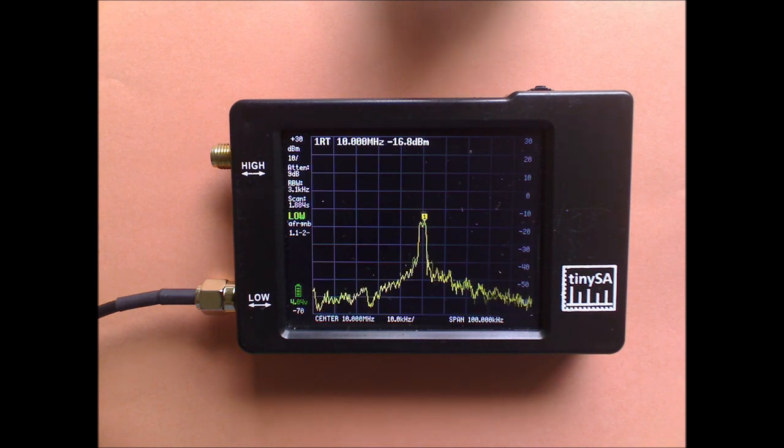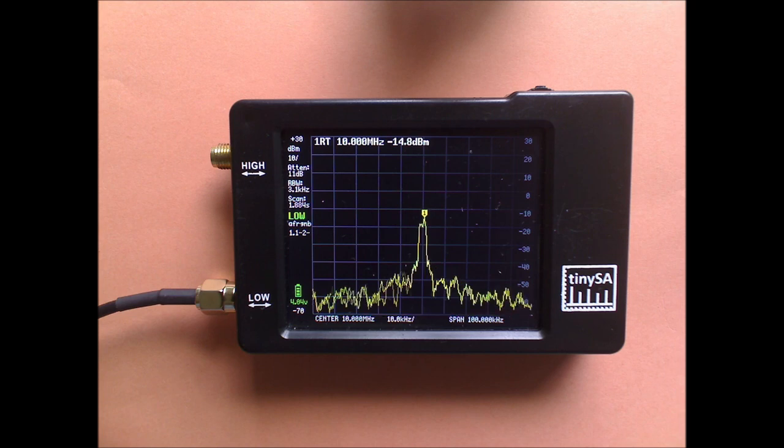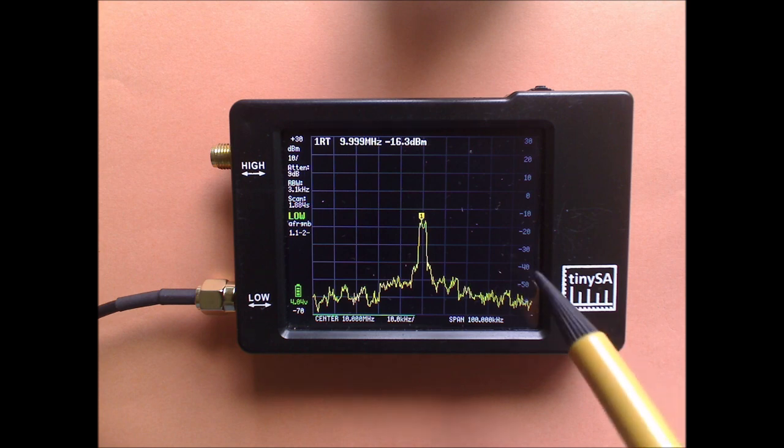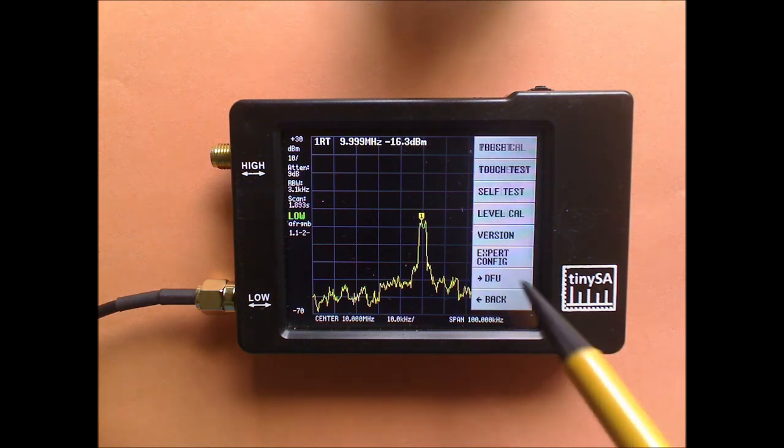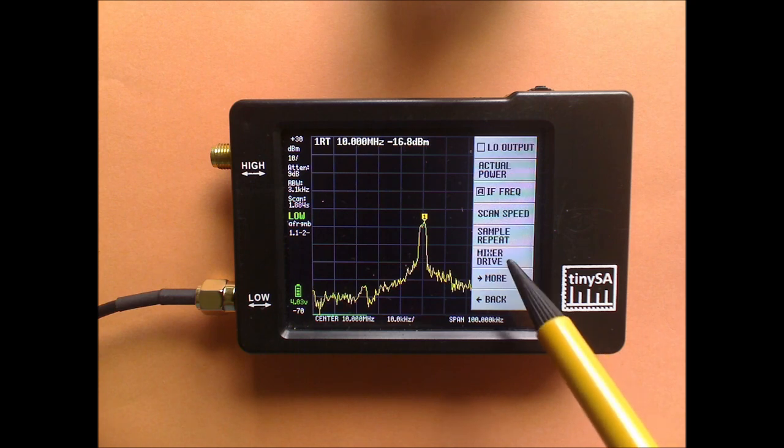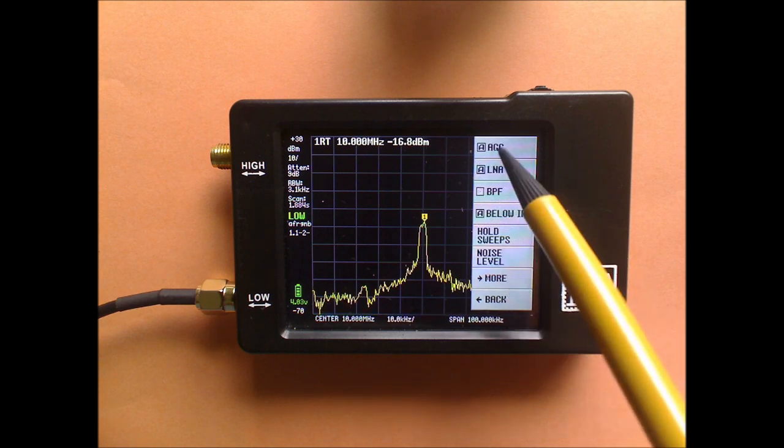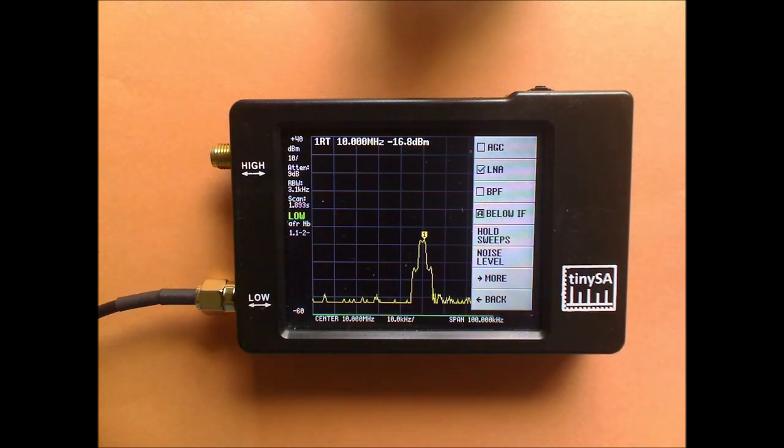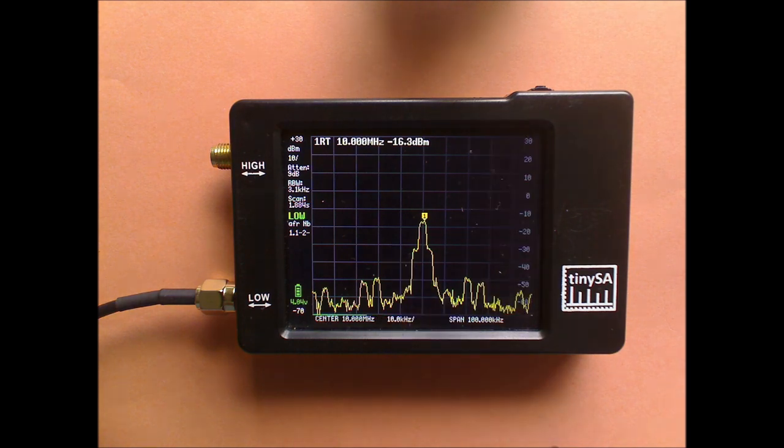We now have to take one more step to be able to see the AM modulation. The TinySA uses an automatic gain control which gets confused from the AM signal. So we have to switch off the automatic gain control. We do that by going into expert config, and we disable the AGC and leave the LNA enabled. And that gives us the wanted signal.